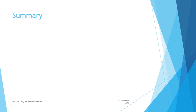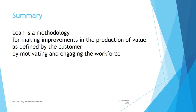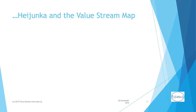To recap: lean is a methodology for making improvements in the production of value as defined by the customer, by motivating and engaging the workforce to eliminate waste. We've broken waste down into mura, muri, and muda. But how do we actually eliminate mura, muri, and muda? The tools needed are heijunka and the value stream map. The concept of heijunka is the next major element to look at in the lean methodology.